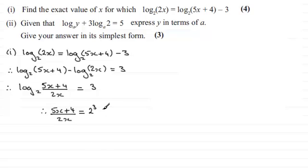Now that we've got this, 2³ is 8, so all I've got to do is multiply both sides by 2x. So I end up with 5x + 4 = 8 × 2x, which is going to give me 16x. Now if I subtract 5x from both sides, what I'm going to be left with is 4 = 11x.